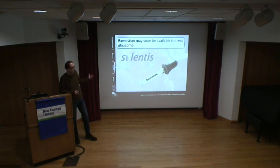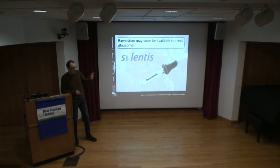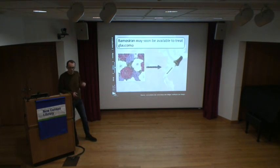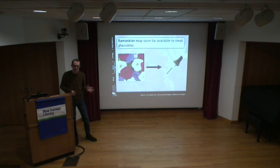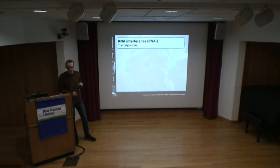That's where a drug called bemsiran comes in — it's in clinical trials and showing some promise, being developed by a company called Silentis. Interestingly, I can draw a direct line of biology behind this drug that started in petunias. Petunias don't have eyes — not where you'd go to study glaucoma — but it turns out it's the same biology at work. The origin story of RNA interference takes us back to 1986.